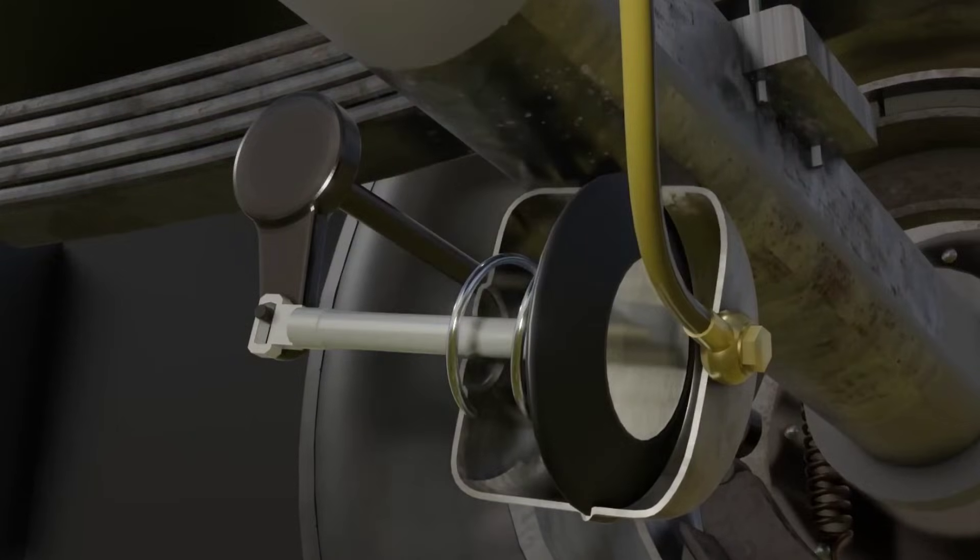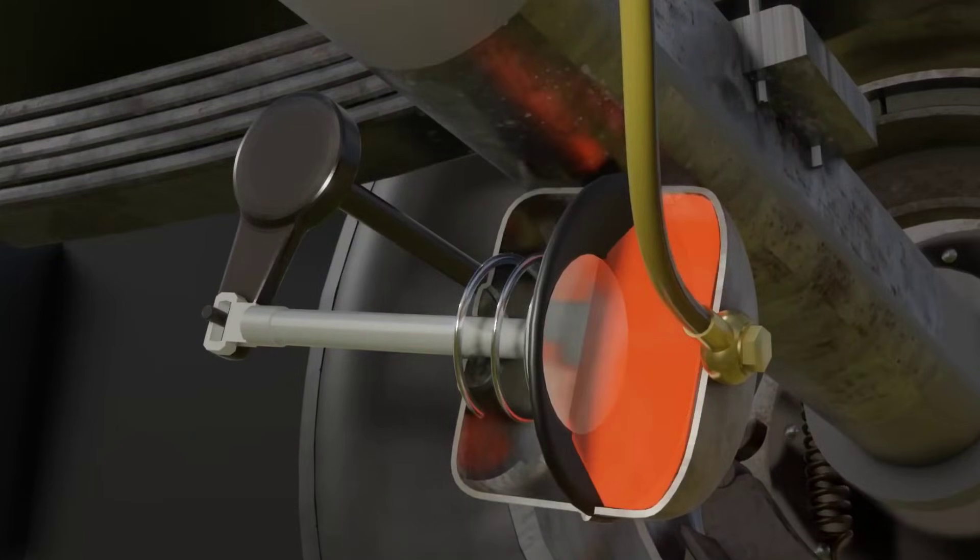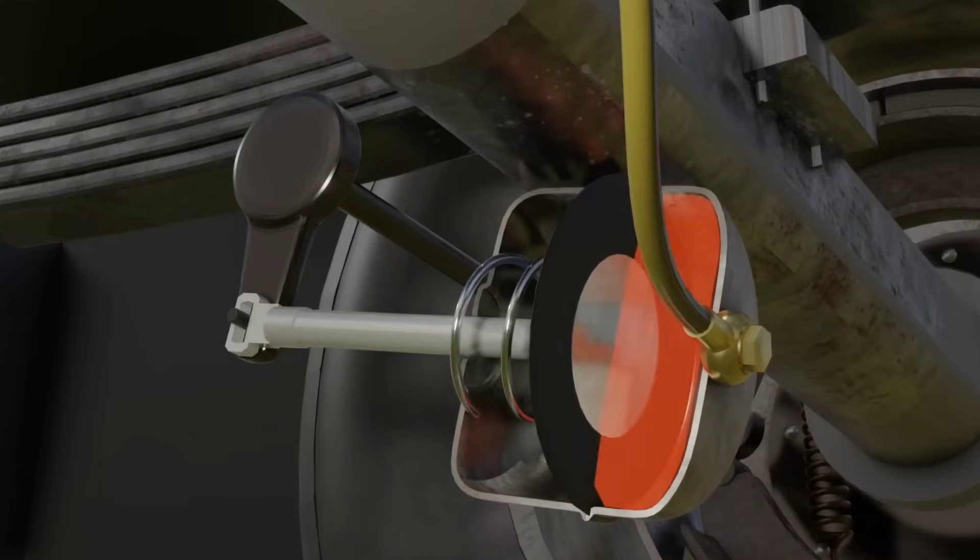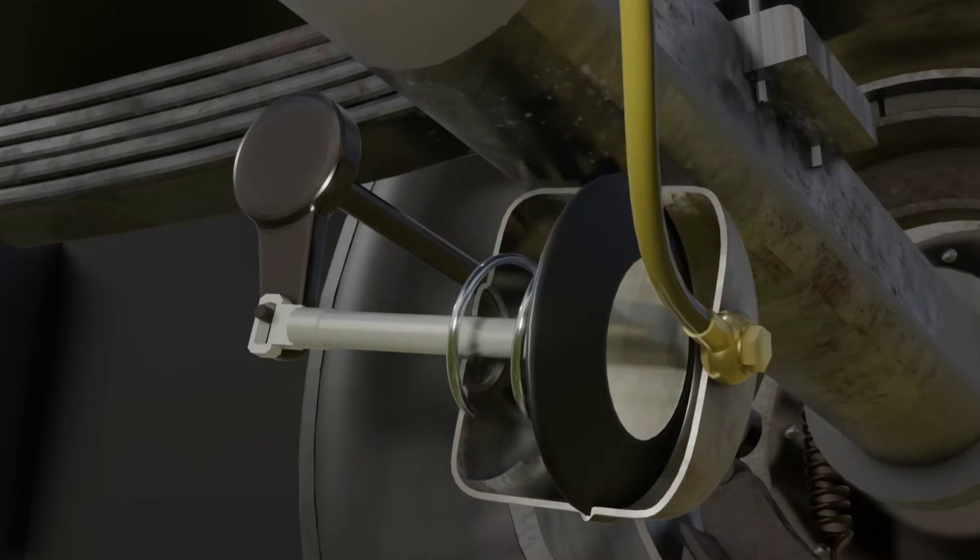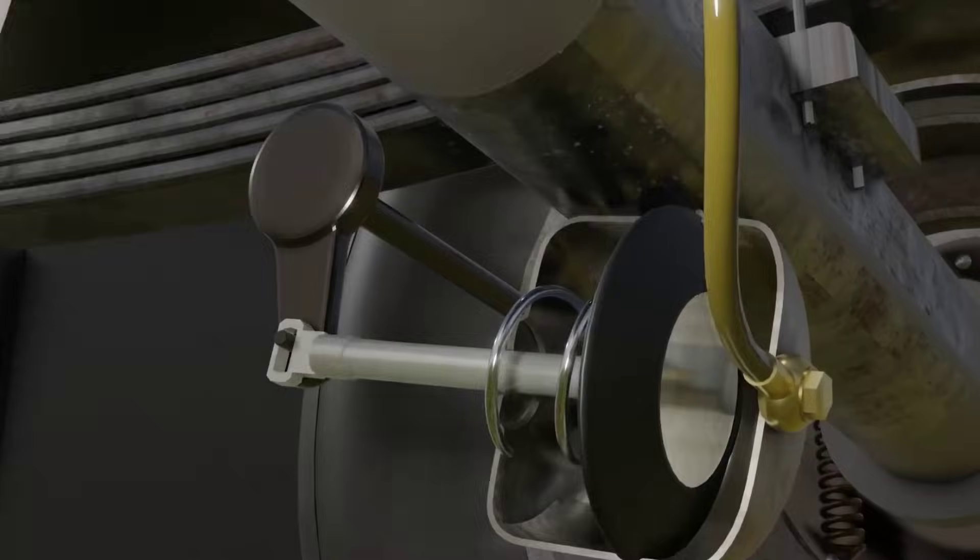The brake chamber is a component for converting air pressure into mechanical movement. Air from the relay valve will press the space in the chamber so that the membrane is pushed. It will push the lever in front of it so that the brakes can activate.